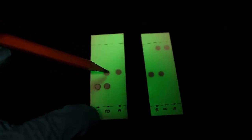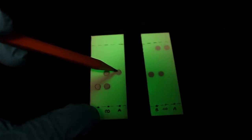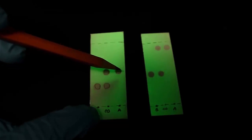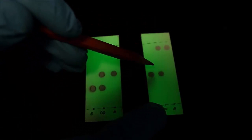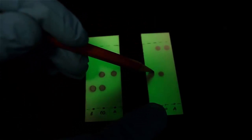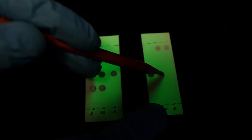The TLC plate can be very useful in determining the purity of your product. Ideally, the product and starting material lane should have one distinct circular spot. The co-spot lane will have two spots if the compounds tested have different RF values. Multiple spots in the lane are an indication of contamination because ideally each compound has its own distinct RF value.